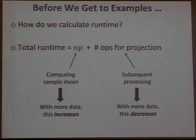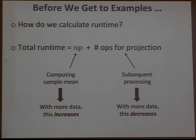How do we calculate runtime? There are two operations: computing the sample mean (n × p operations) and projection onto the convex set C. Computing the sample mean increases with more data, but the number of operations for projection decreases as you use simpler sets. The hope is that this decrease is larger than the increase, yielding actual time-data trade-offs.